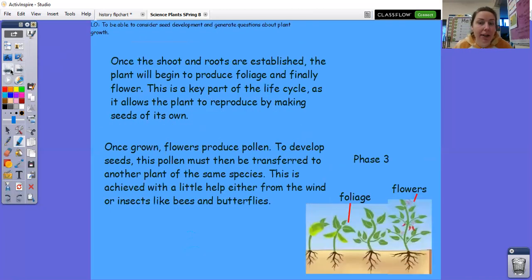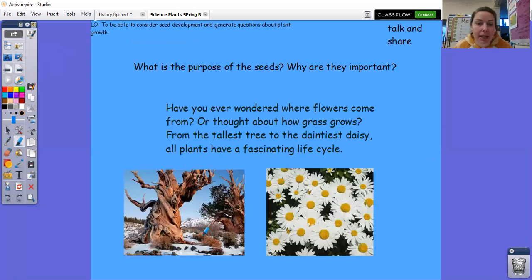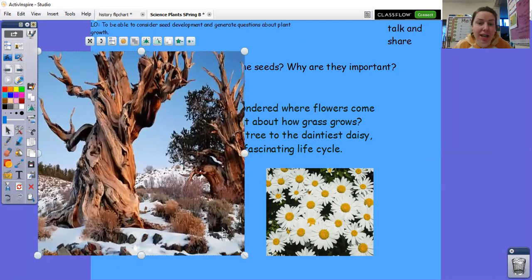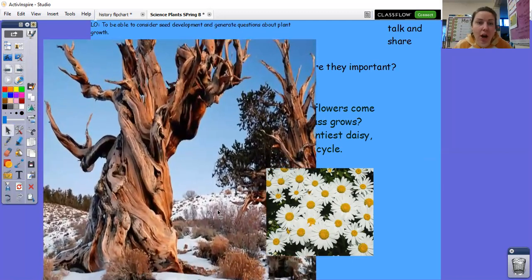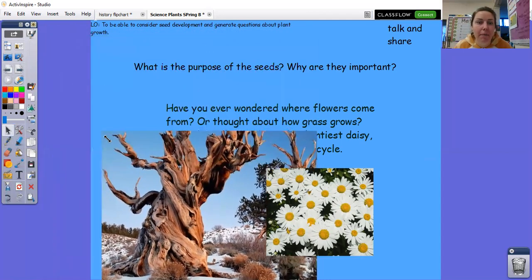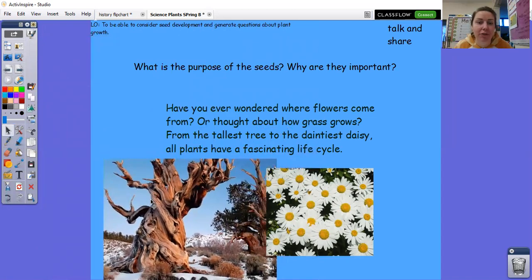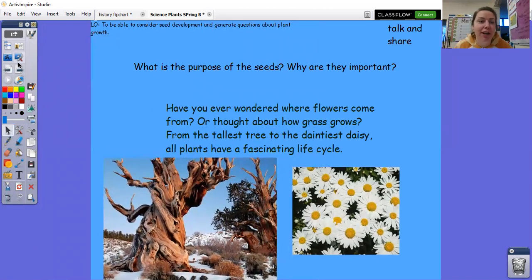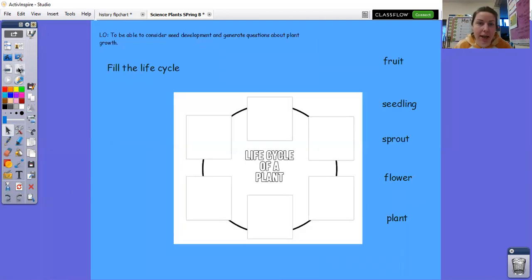So if you go back to this picture here that I had at the beginning, this tree here, this is one of the oldest trees in the world. They are almost 5,000 years old. How crazy are these? And it's said that they last so long because of the harsh conditions. So their seeds have to be really strong and really ready for their fight for their lives. How amazing.